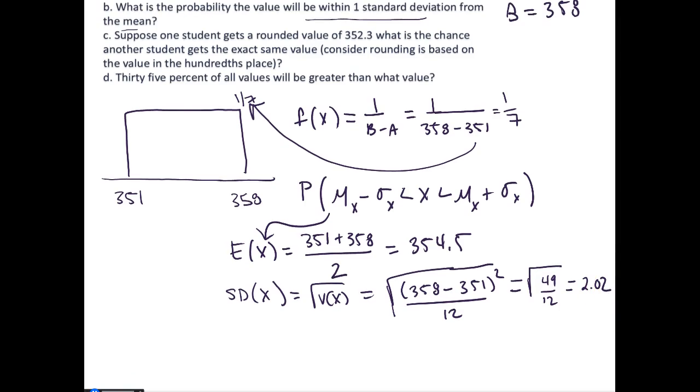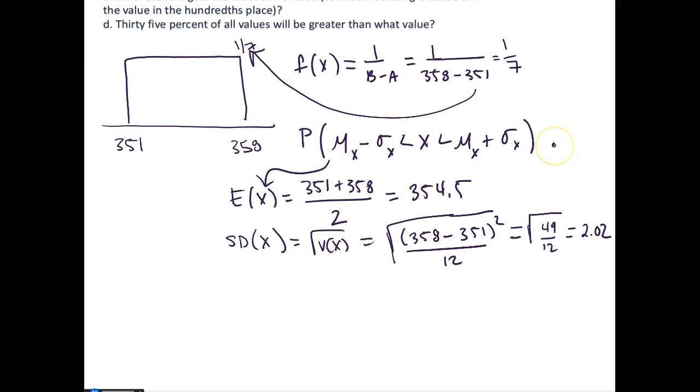Now we can simply plug this into the expression, so we get the probability of 354.5 minus 2.02 is less than X and X is less than 354.5 plus 2.02.